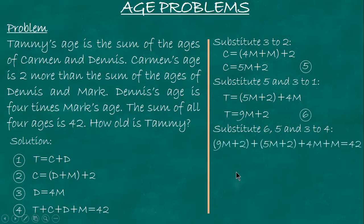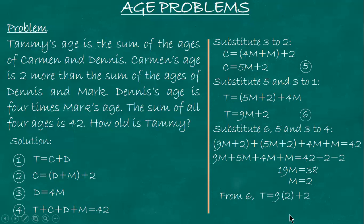Using equation 4, we have expressions for T, C, and D in terms of M. We substitute equation 6, equation 5, and equation 3 into equation 4. This gives: 9M plus 2 plus 5M plus 2 plus 4M plus M equals 42. Combine like terms: 19M plus 4 equals 42. Transpose: 19M equals 38. M equals 2. Going back to this problem: How old is Tommy? From equation 6, substituting M equals 2: T equals 9(2) plus 2 equals 20. Therefore, Tommy is 20 years old.